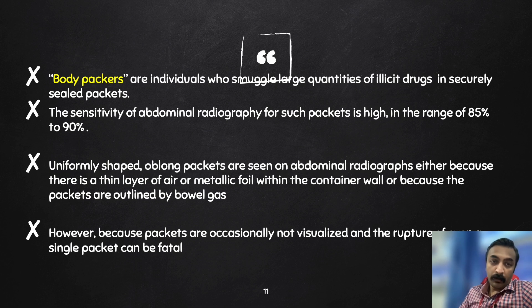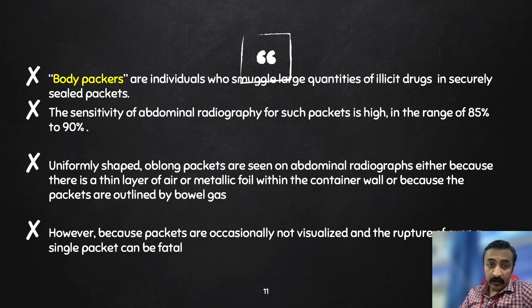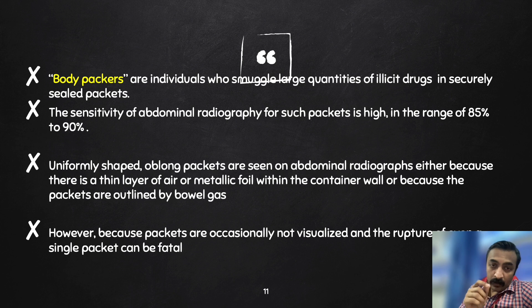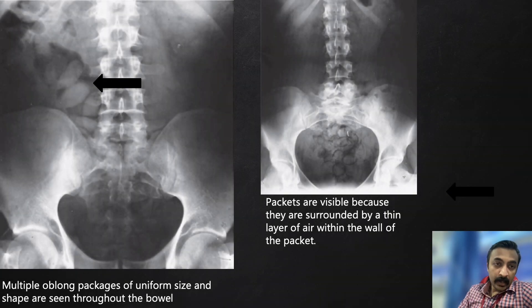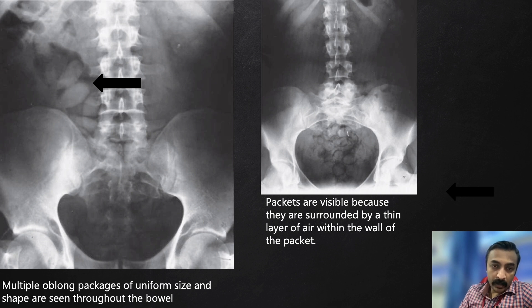This is a CT image of a body packer. Body packers are individuals who smuggle large quantities of illicit drugs in secured sealed packets. The sensitivity of abdominal radiograph for such packets is high, ranging from 85 to 90%. Uniformly shaped oblong packets are seen on abdominal radiographs either because there is a thin layer of air or metallic foil within the container wall, or because the packets are outlined by bowel gas. Remember that rupture of such a pack would be fatal to the carrier.